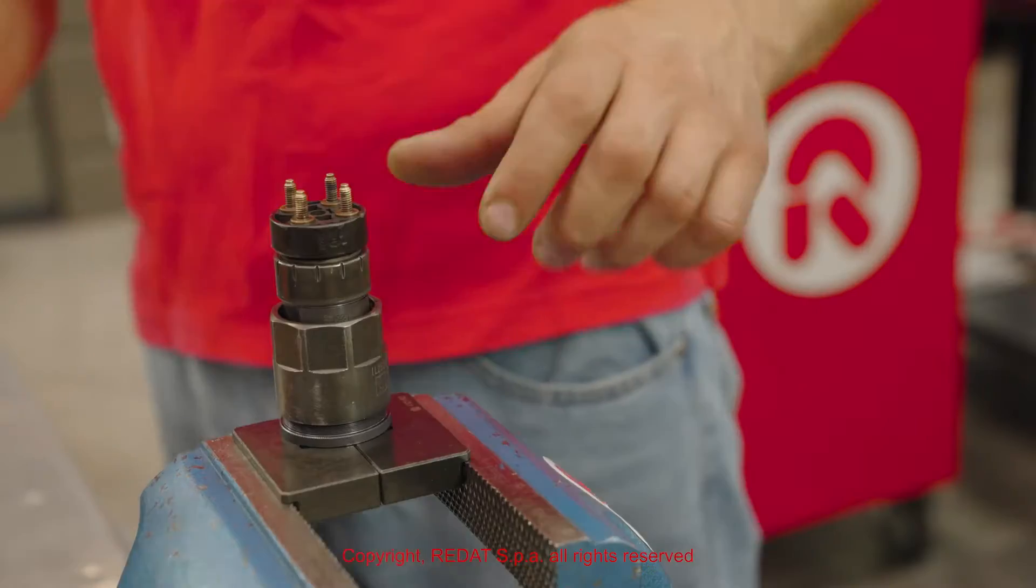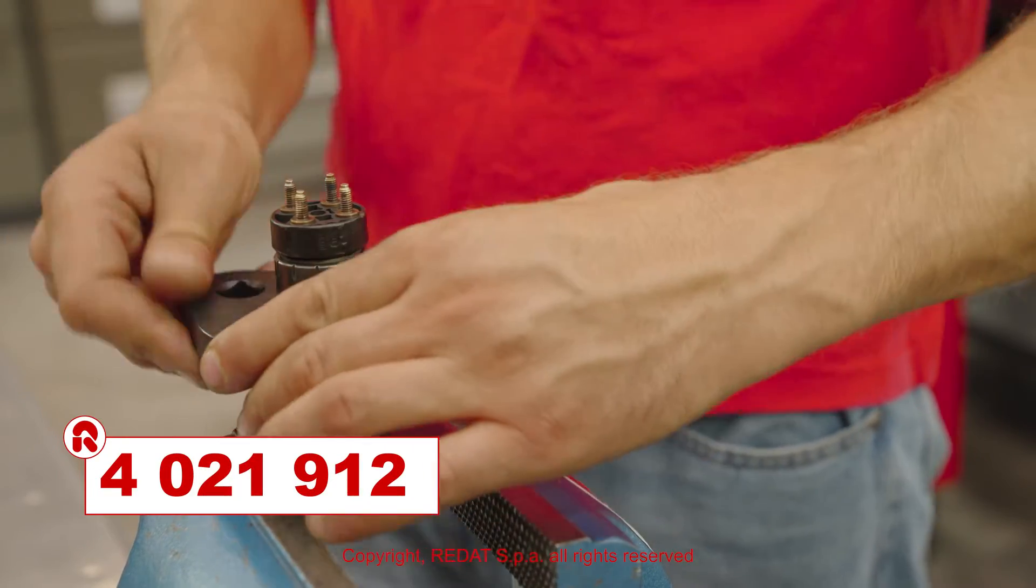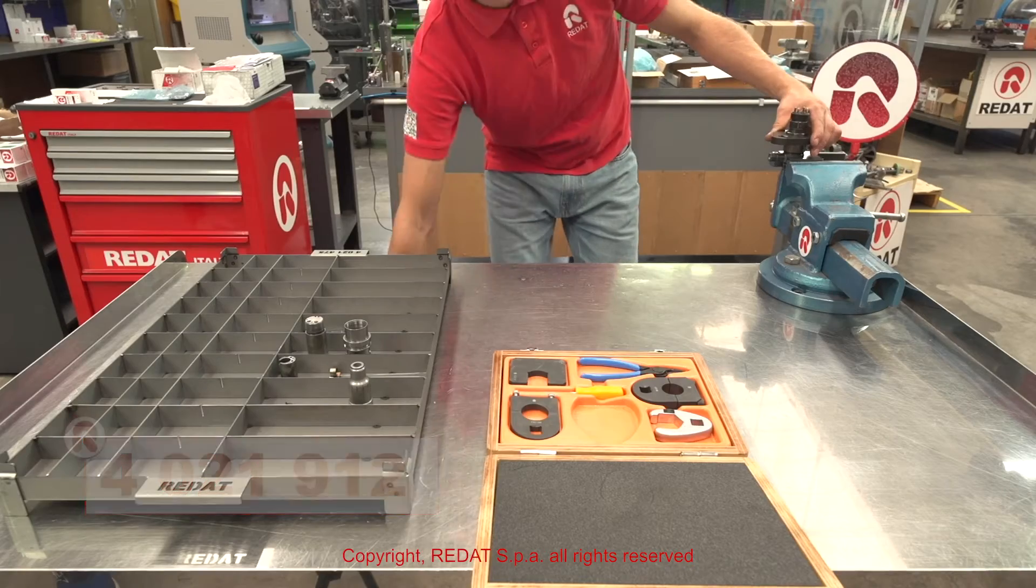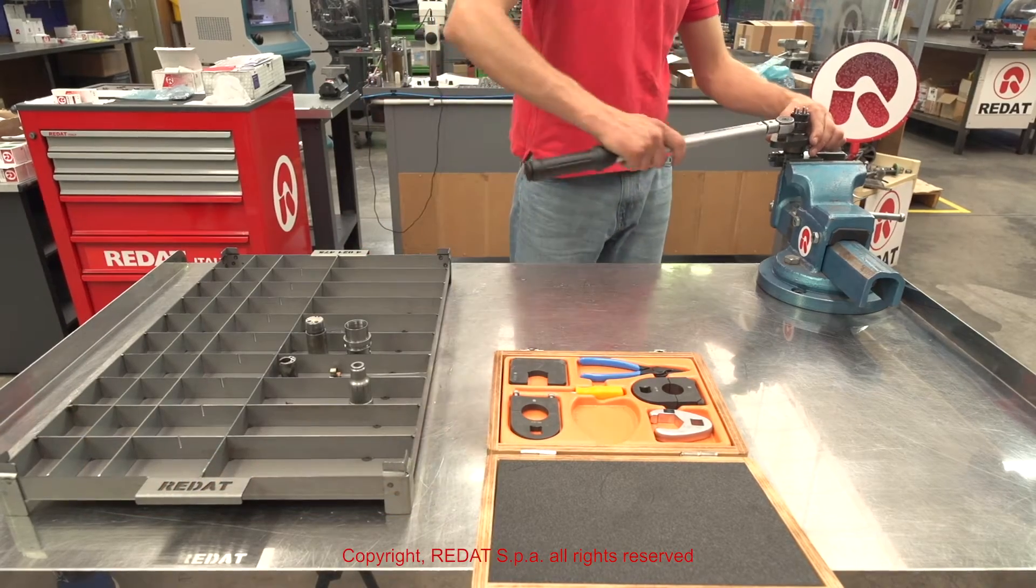Using the wrench 4 0 2 1 9 1 2, we tighten the solenoid nut to 90 Nm.